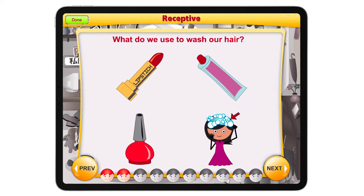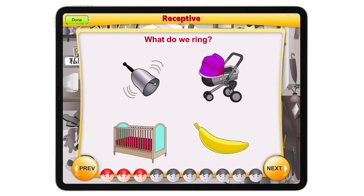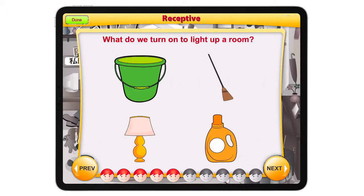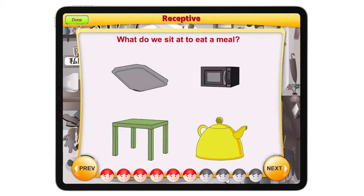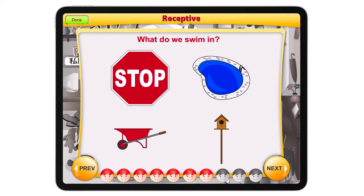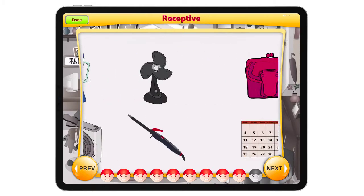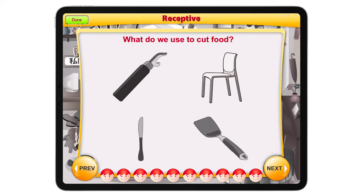The app continues with a variety of receptive questions across all categories: what do we use to wash our hair? What do we ring? What do we wear to stay dry in the rain? What do we turn on to light up a room? What do we sit at to eat a meal? What do we swim in? What do we use to take pictures? What do we use to look up the days and months? What do we use to cut food? All of these were examples of receptive questions with all categories included.